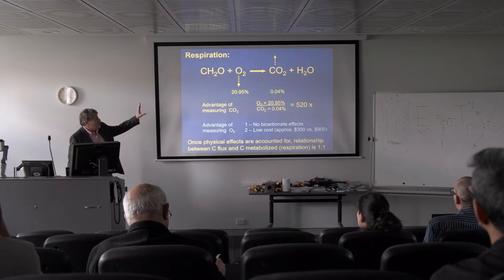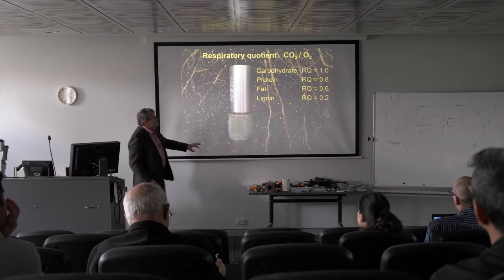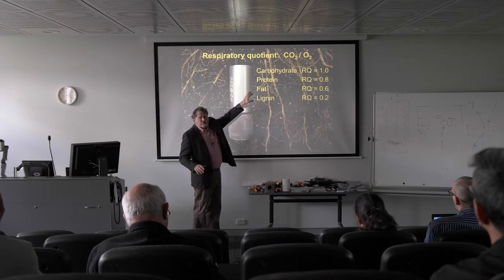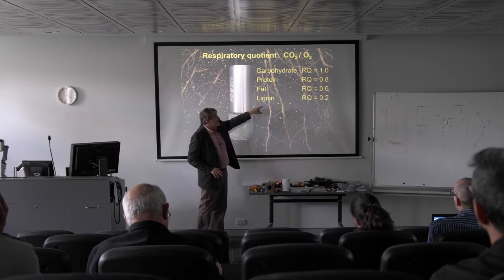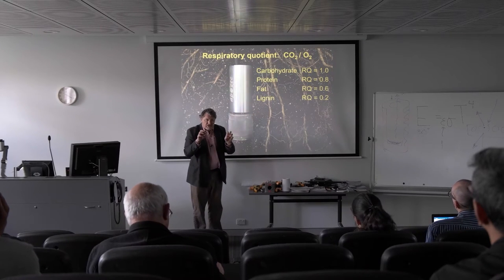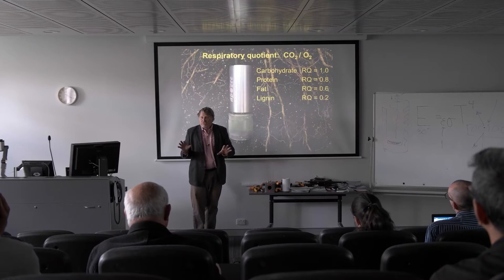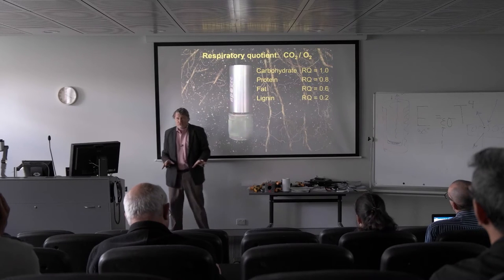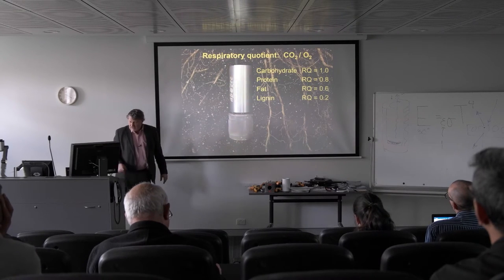So this would normally be one to one, but look at this respiratory quotient table: carbohydrates — 1.0; proteins — 0.8; fats — 0.6; and lignin — 0.2. So we could begin to see what's being degraded, what type of material is being degraded, if we can develop this sensor.